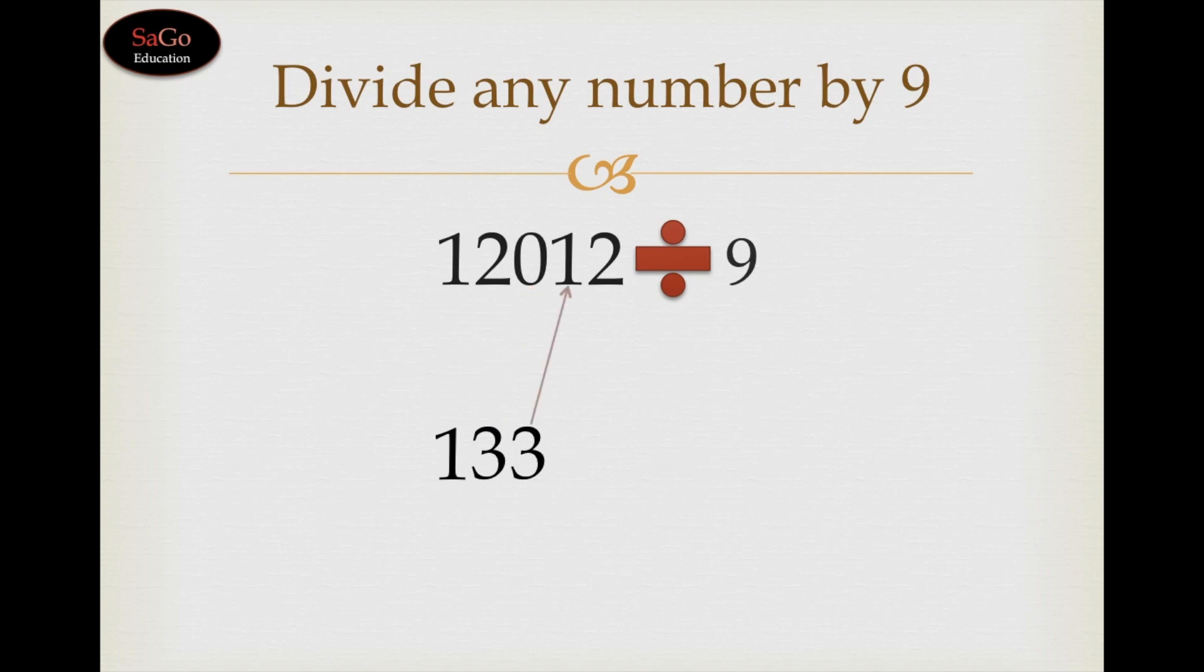Now this 3 would be added to the next digit. 3 plus 1 makes 4, write 4. Now the 4 has come, 4 would be added to the next digit which is 2. 4 plus 2 is 6, write 6.